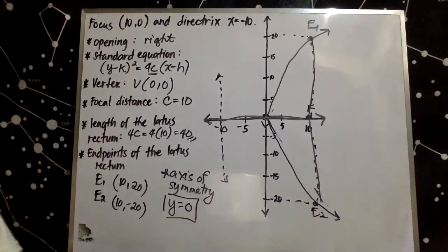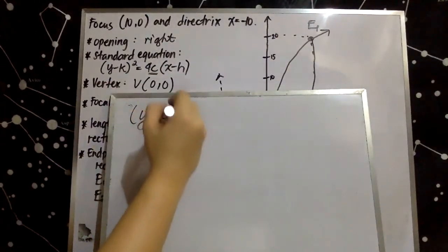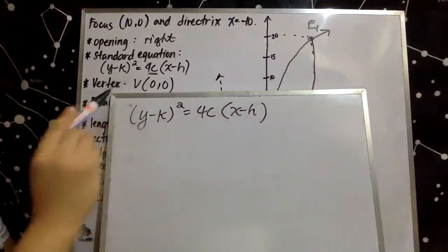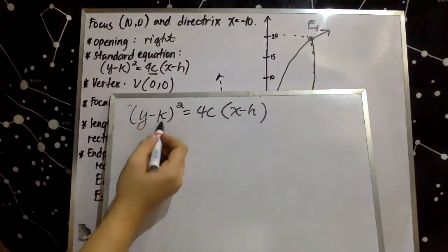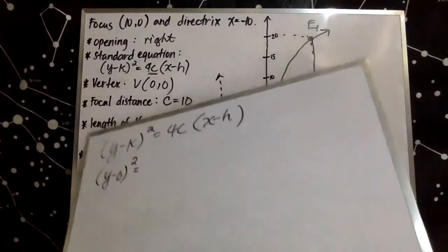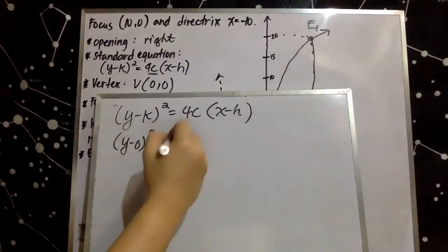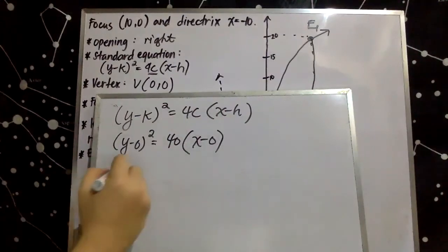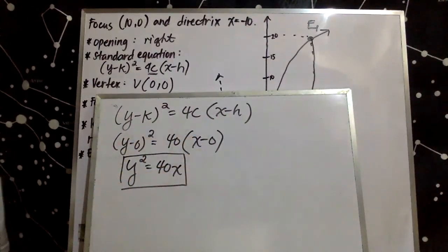Now, how do we determine the standard equation of the parabola? Using the equation y minus k, quantity squared, equals 4c times x minus h, we determined the vertex coordinates as h equals 0 and k equals 0. Substituting, we have y minus 0, quantity squared, equals 40 times x minus 0. Simplifying, y squared equals 40x. This is the standard equation of the given parabola.